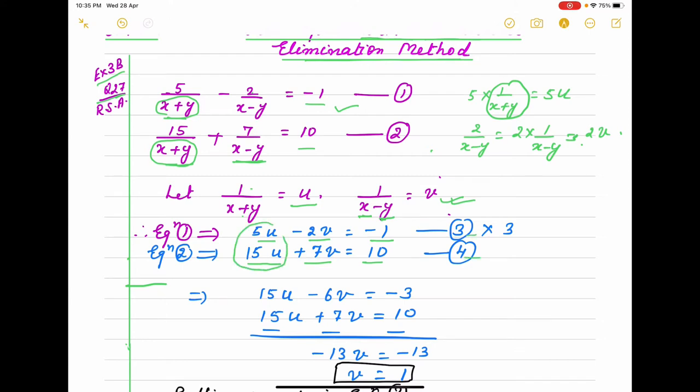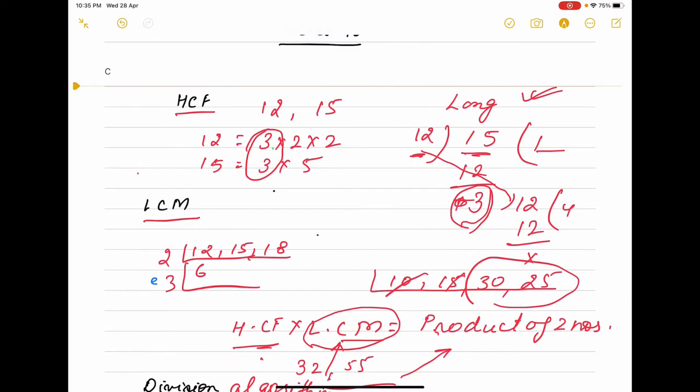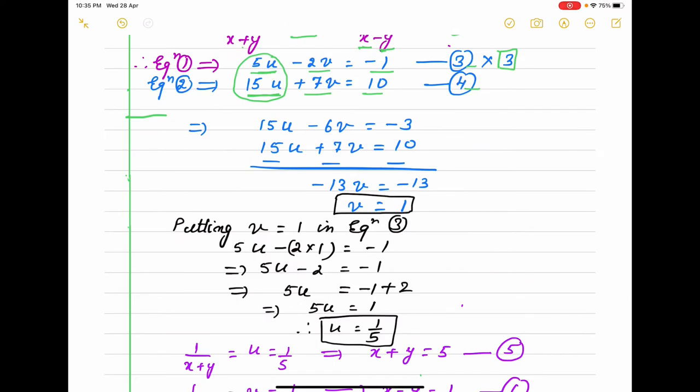Now we try to eliminate u. It is 5u and 15u. If we multiply this equation by 3, it will be 3 multiplied by 5u is 15u. 15u - 6v = -3. I am multiplying each term. Second equation you write as it is: 15u + 7v = 10.